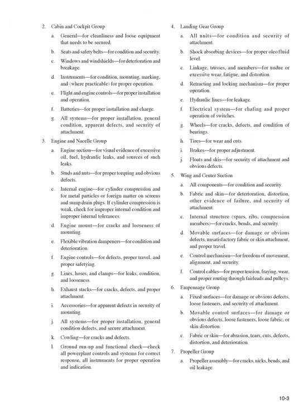2. Cabin and cockpit group — (A) General, for cleanliness and loose equipment that needs to be secured; (B) Seats and safety belts, for condition and security; (C) Windows and windshields, for deterioration and breakage; (D) Instruments, for condition, mounting, marking, and where practicable, proper operation; (E) Flight and engine controls, for proper installation and operation; (F) Batteries, for proper installation and charge; (G) All systems, for proper installation, general condition, apparent defects, and security of attachment.